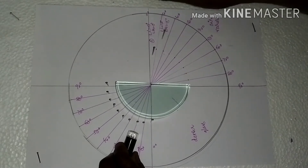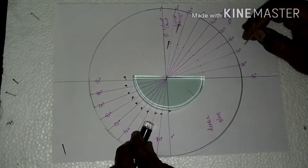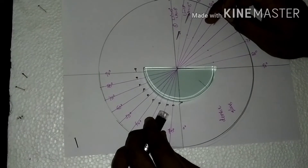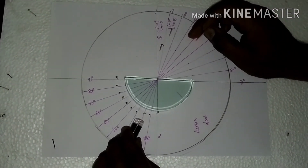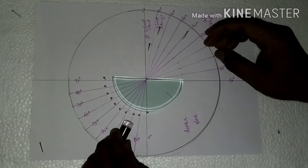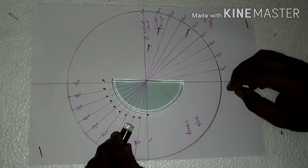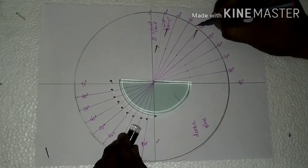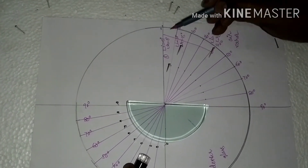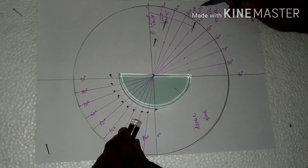Now move to the angle of incidence of 20 degrees. The laser light is passing in this direction at an angle of 20 degrees. We can understand that the laser light should pass through the pin. I am going to place the pin, and the laser light must and should pass through it. In this third case, angle i is equal to 20 degrees and angle r becomes approximately 42 degrees.